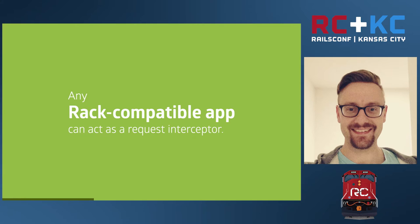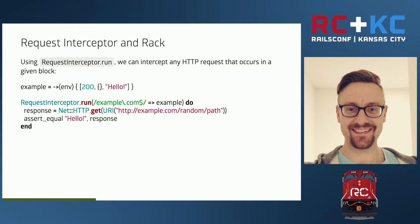The idea is that you can use any Rack-compatible app and use it as a Request Interceptor that intercepts an HTTP request sent out by your application and reroutes it to your Rack app, which will then handle the request inline. All you need to know is that Request Interceptor implements a run method, which takes a Rack application as well as a hostname pattern. The hostname pattern is important to know when Request Interceptor starts intercepting requests.